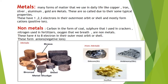On the other hand, non-metals like carbon in the form of coal, sulfur used in crackers, nitrogen used in fertilizers, and oxygen that we breathe are non-metals. These have four to eight electrons in their outermost shell or orbit and they form anions. Examples of metals include steel, brass, and bronze; non-metals include silicon and antimony.